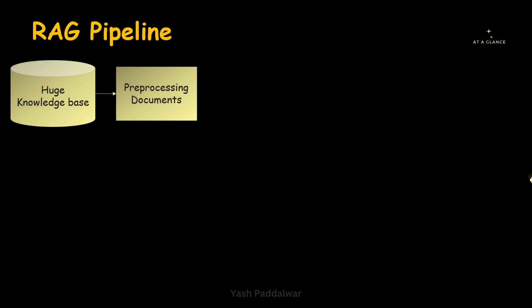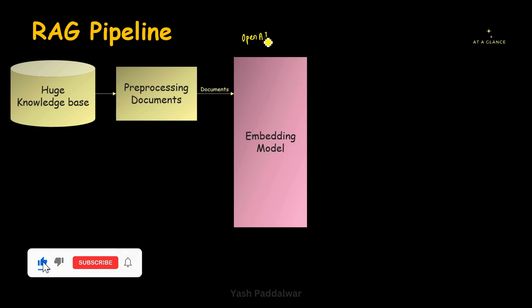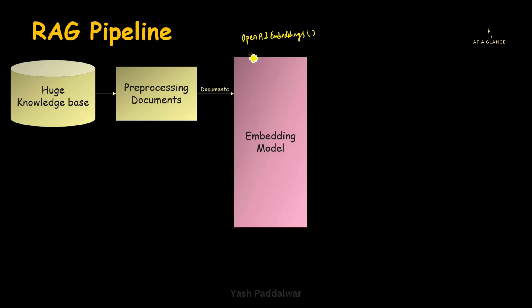Once this pre-processing stage is done, we'll pass on these documents into the embedding model. This embedding model will create vector embeddings of the chunks that we have created from the documents. Embeddings are nothing but mathematical representations of the text in the form of vectors. There are a variety of embedding models available from various sources — for example, we may use OpenAI embeddings, or we may use open-source embedding models which are present in Hugging Face. We can use any one that gives better results.